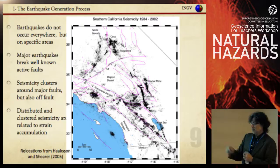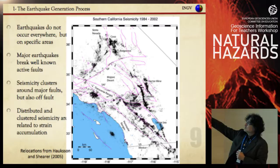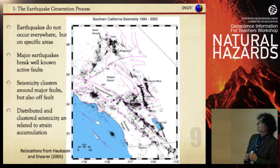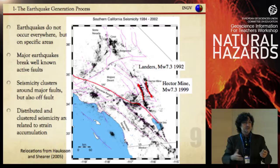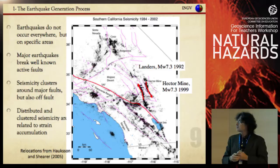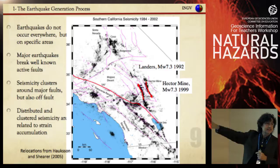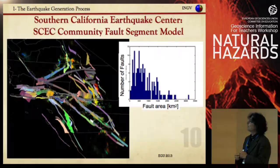Earthquakes do not occur everywhere. Because major earthquakes break well-known faults, here you see the red San Andreas fault and the dots are seismicity — seismicity clusters around the fault, including two recent big earthquakes in California. But seismicity also clusters far away from the fault planes, because the fault structure is much more complex, and also the seismicity distribution is related to strain accumulation from tectonic processes.